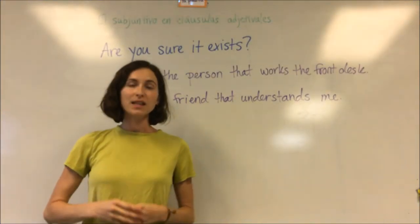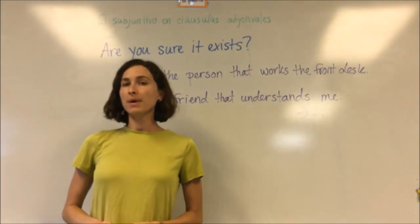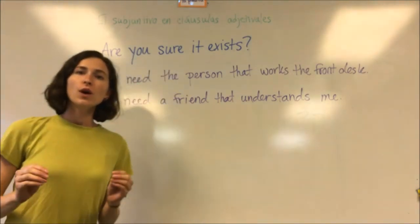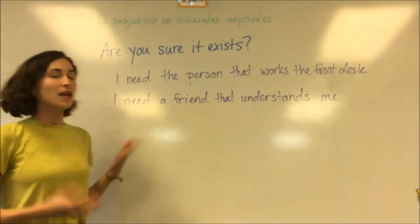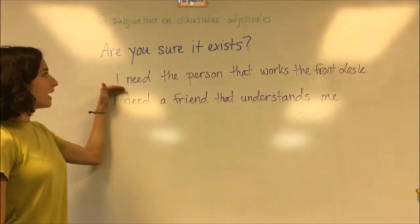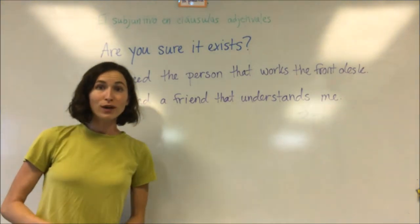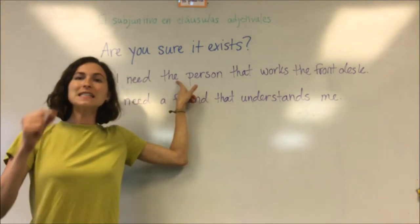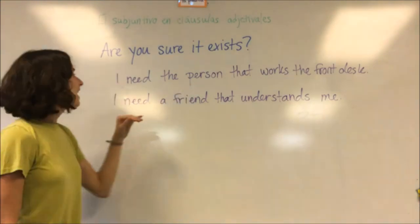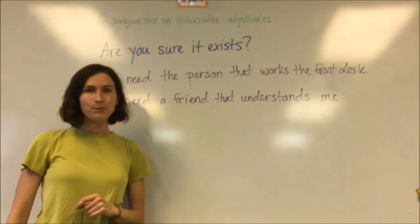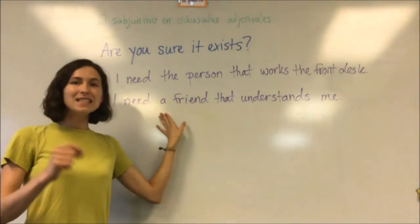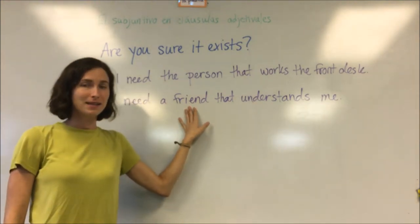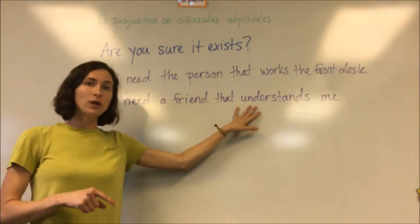If we know that something exists and we're stating a fact, we use the indicative. But if we're talking about something whose existence we are unsure of, we use the subjunctive. We can ask ourselves: am I sure that this exists? For example, 'I need the person that works the front desk' — I'm sure that person exists, so I use 'the,' a definite article. Versus 'I need a friend that understands me' — 'a' is an indefinite article, which indicates that this friend might not presently exist. So we would then use the subjunctive mood after that.